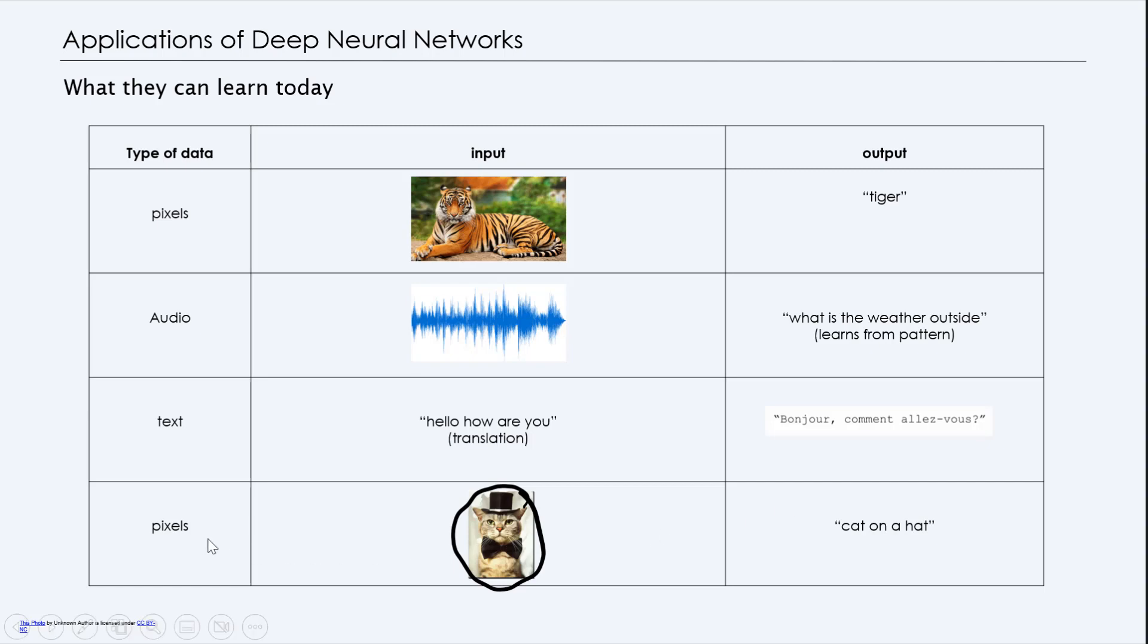And you can also do interesting things such as combining two objects in a picture. In this case, this would be a cat on a hat. So this means that you have to recognize that this picture has a cat and as well as a hat.